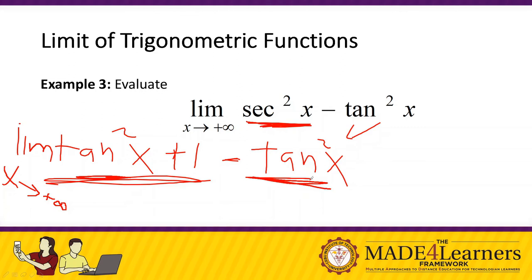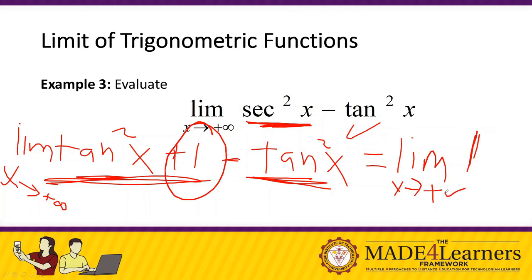What remains is just 1. So we have the limit of 1 as x approaches positive infinity. According to our constant rule, the limit of a constant is just the constant itself. So the answer is 1. In this scenario, we used trigonometric identities to solve for the limit of the function.